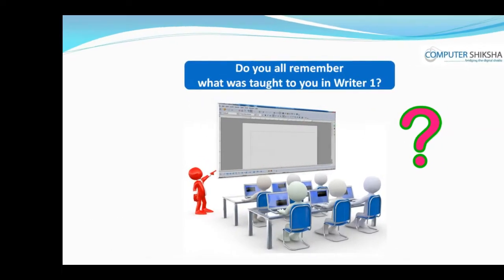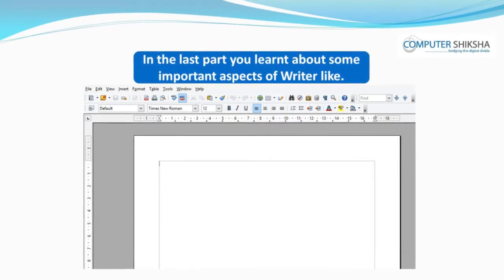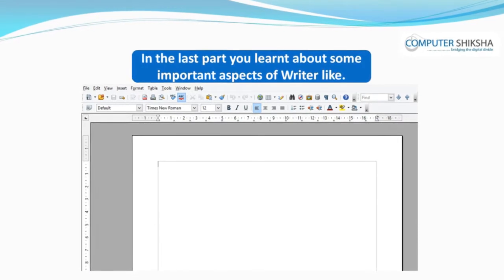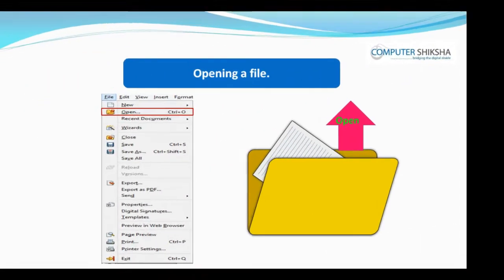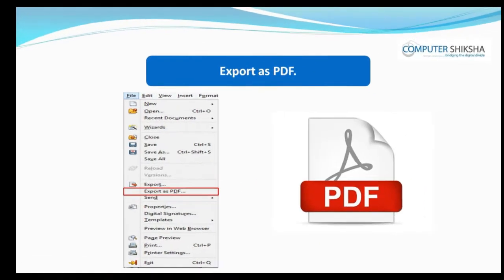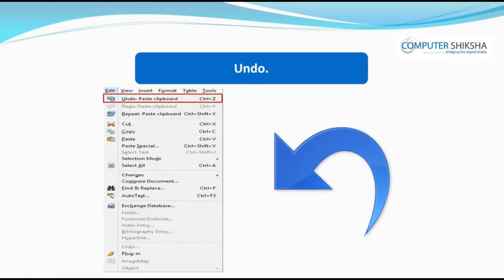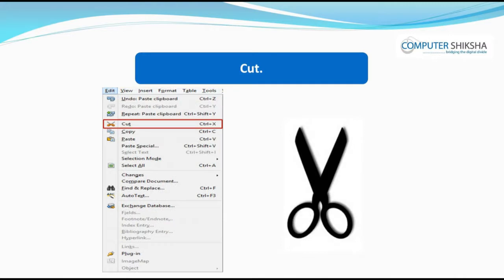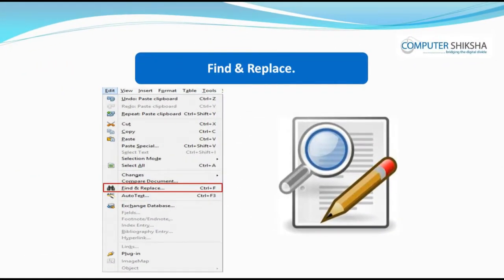Do you all remember what was taught to you in Writer 1? In the last part, you learned about some important aspects of Writer, like saving a file, opening a file, save as option, export as PDF, undo, redo, cut, paste, find and replace, etc.